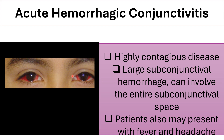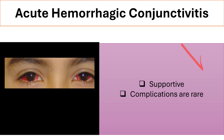Acute hemorrhagic conjunctivitis presents with large subconjunctival hemorrhage that can involve the entire subconjunctival space. Patients may also present with fever and headache. Management is reassurance and supportive care. Topical eye drops and antibiotics will not work, as it is self-limited and will disappear by itself.